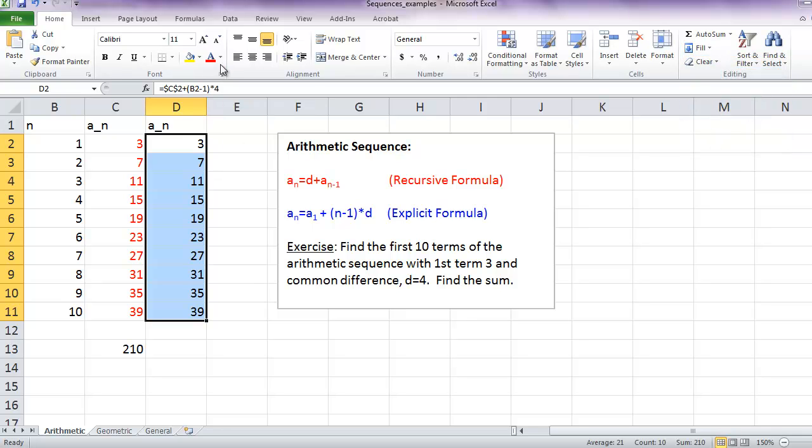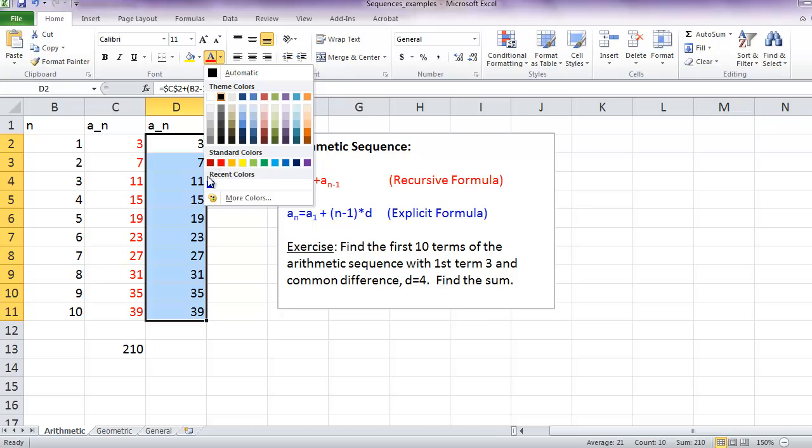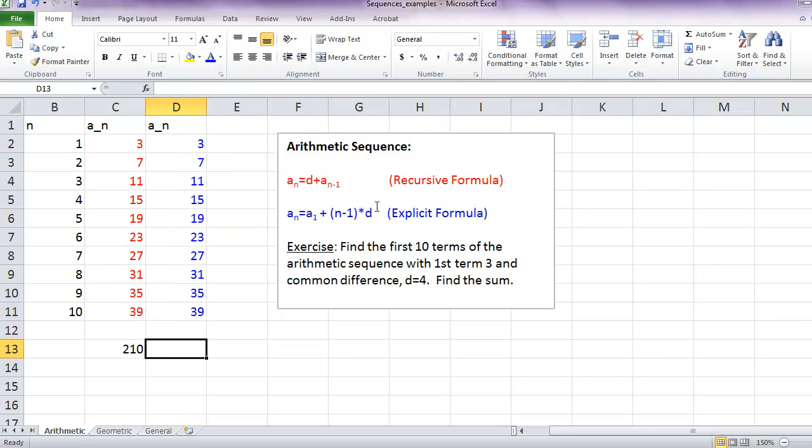And we get exactly the same values, which is what we expect. These are just two different ways to compute the terms in the arithmetic sequence.